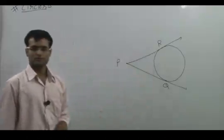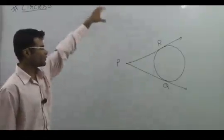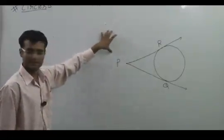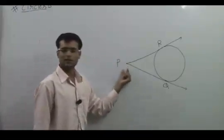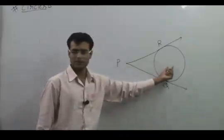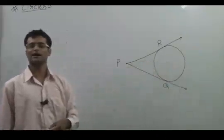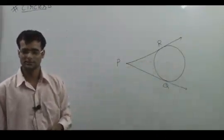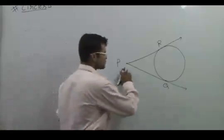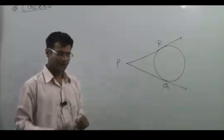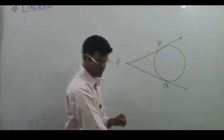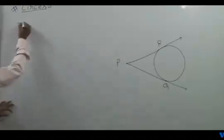Only two tangents we can draw, not more than these two. Now what is the property of these two? A theorem about circles and tangents says that if you draw any two tangents from an external point to the same circle, then these two tangents are equal to each other. It means PR is equal to PQ.